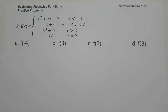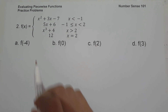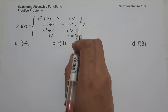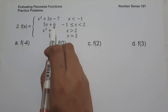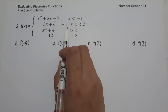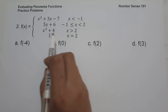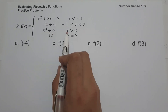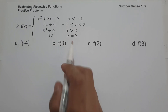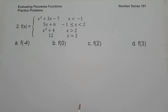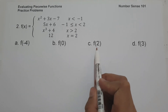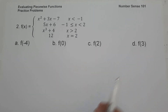On example number 2, f of x is equal to x squared plus 3x minus 7 when x is less than negative 1. It equals 5x plus 6 when x is greater than or equal to negative 1 but less than 2. It equals x cubed plus 4 when x is greater than 2, and it equals 12 when x is equal to 2. Find the value of f of negative 4, f of 0, f of 2, and f of 3.